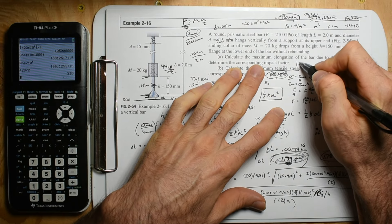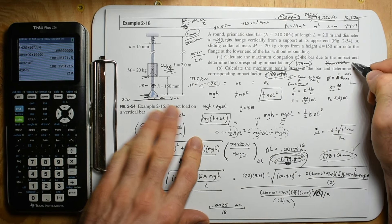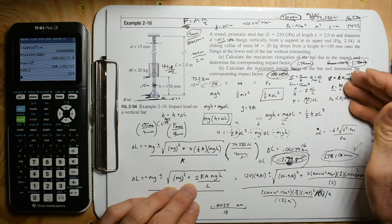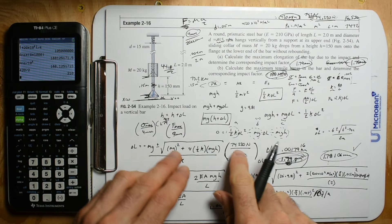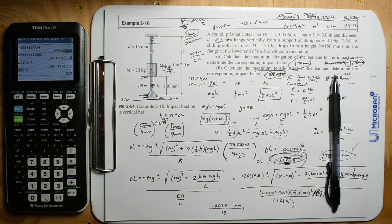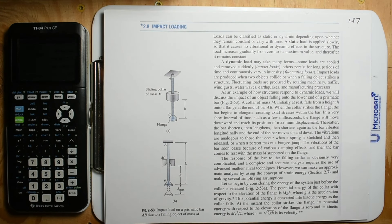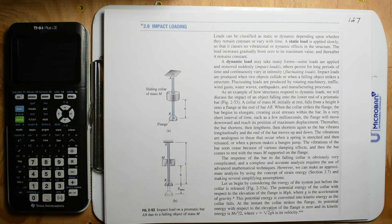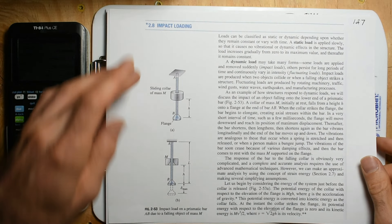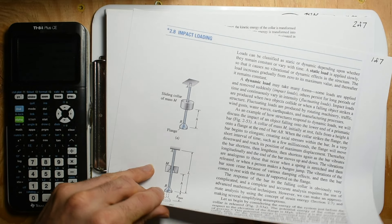The answer is 1.79 — the book does it the simplified way and gets 1.78 millimeters. So we did it the exact way. Maybe I'll show you this page in the book so you can at least believe me. Here's the section on impact loading — you can read it. In another video we'll go over this more.